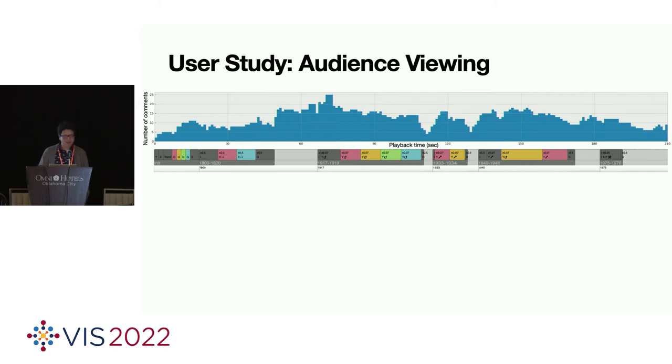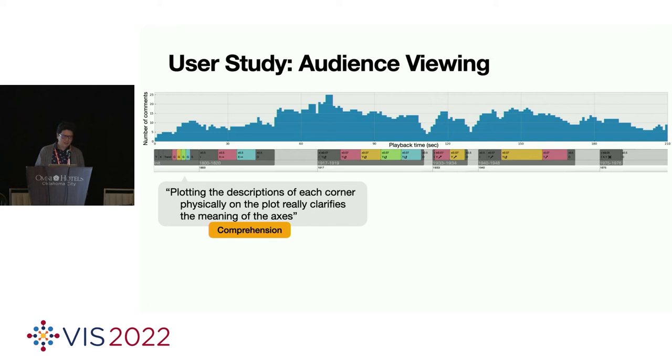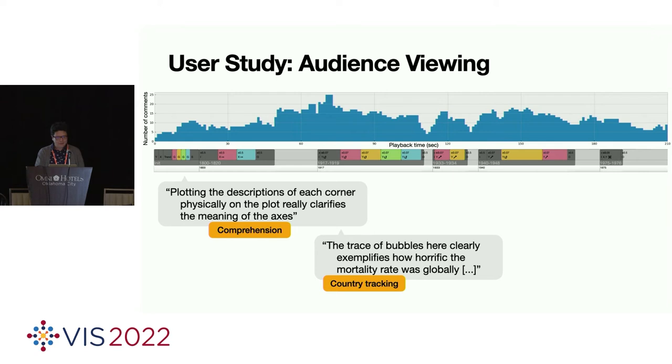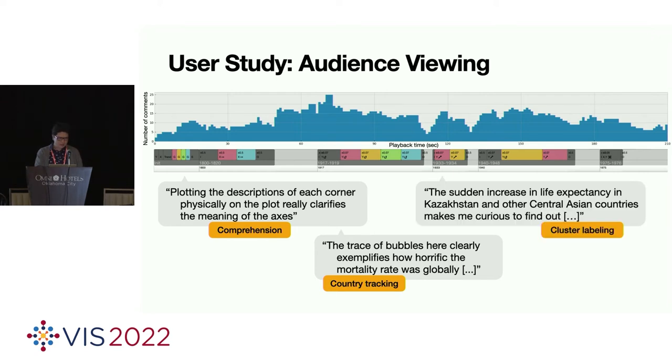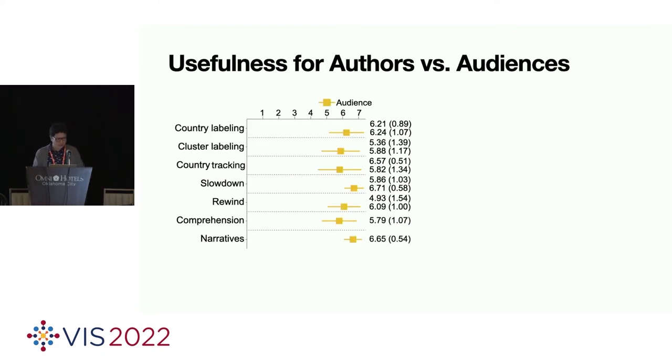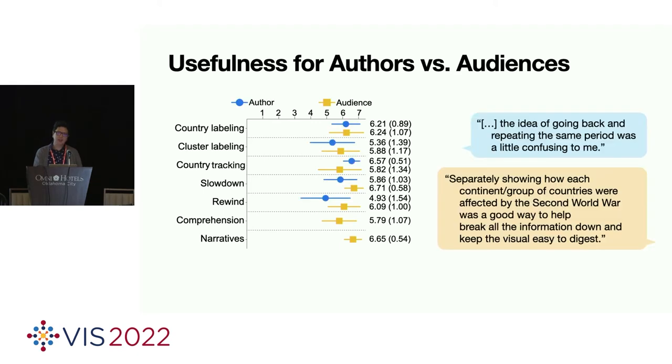So the results show that in the authoring evaluation is that the participants think that the system is easy to use and fun to use. And that they actually use the system. They find many new insights as well. The audience side evaluation results show that the participants gave high scores to different storytelling techniques that we extracted. And these help the people better understand data presentation with narratives. And this is the intervals that participants think interesting. And the one thing that is notable is that the Hans-Rosling strategy in introduction actually helped people understand data presentation a lot.